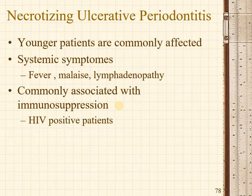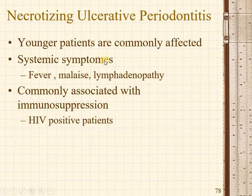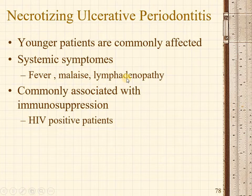Necrotizing ulcerative periodontitis is generally seen in younger patients. Systemic symptoms similar to necrotizing ulcerative gingivitis are seen, including fever, malaise, and lymphadenopathy. These are commonly associated with HIV-positive individuals where immunosuppression is already existent.